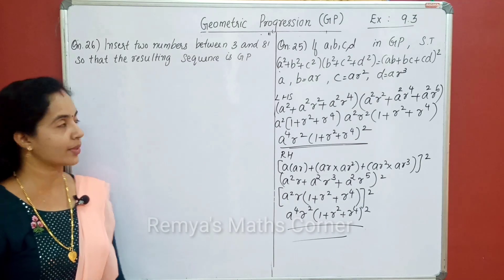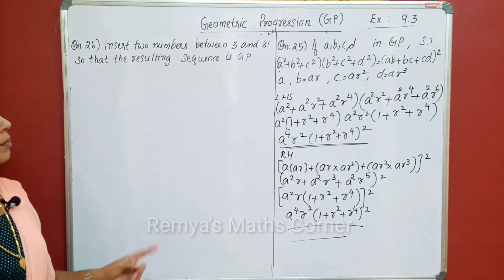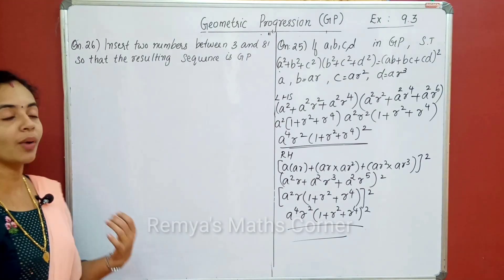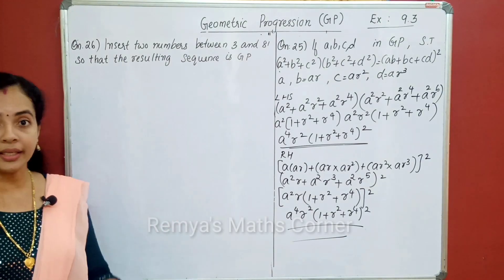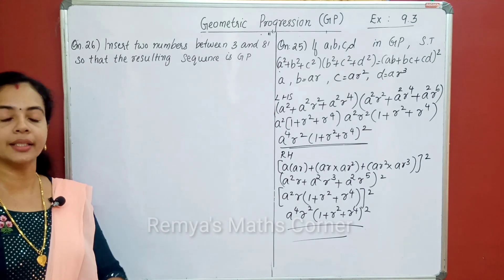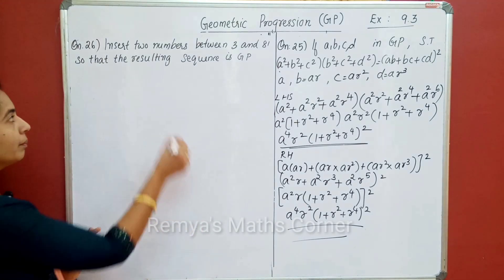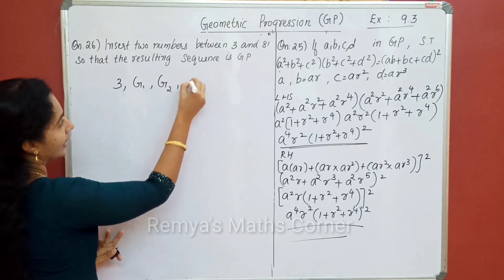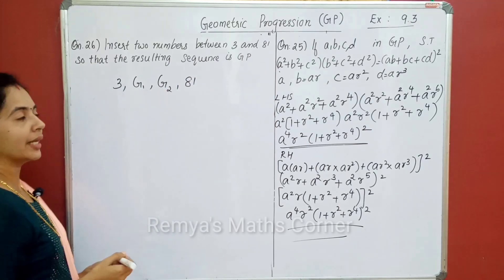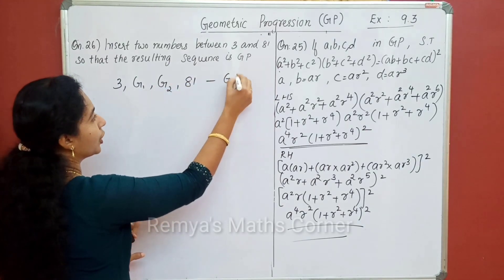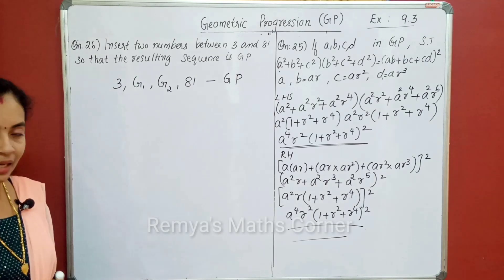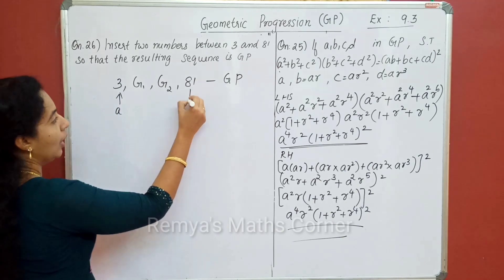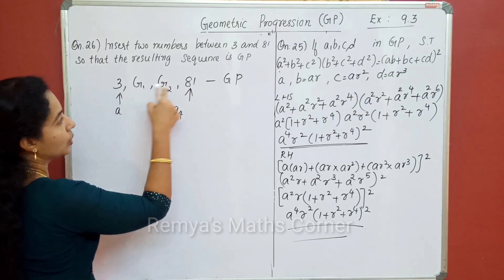Let's take a look at the 26th question: Insert 2 numbers between 3 and 81 so that the resulting sequence is a GP. 3 and 81 — we have to insert 2 numbers. 1, 2, 3, 4 — the fourth term means a r cube.